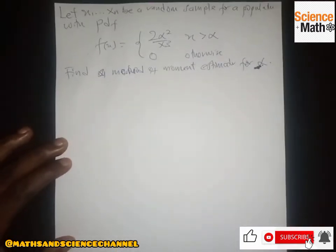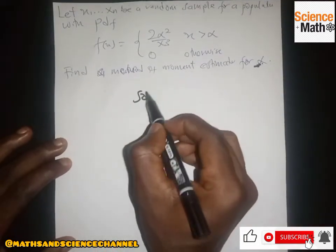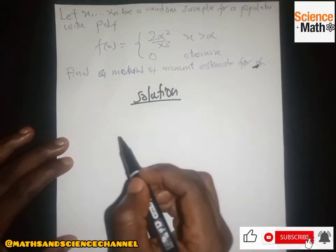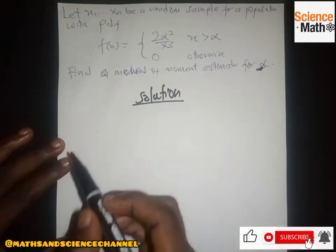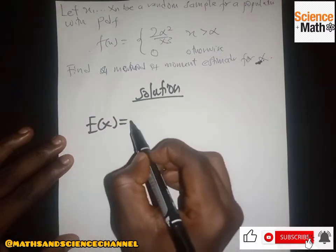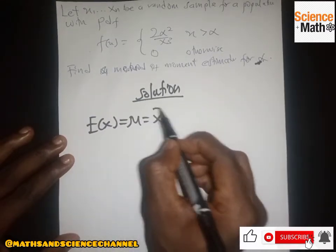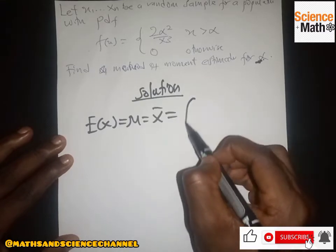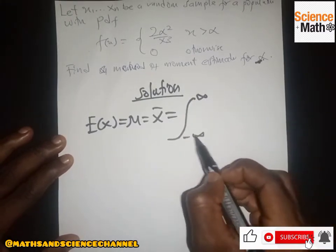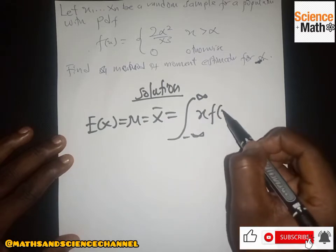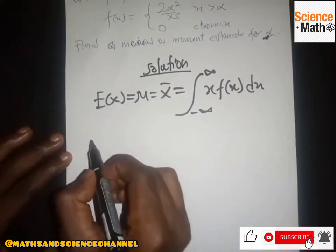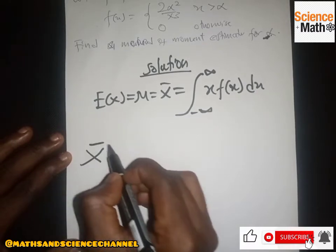This is the continuous case for the method of moments. For the continuous case, we have E[X] equal to μ, which is also equal to x-bar, and that equals the integral from negative infinity to positive infinity of x multiplied by f(x) dx.